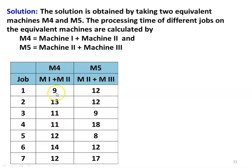The equivalent processing times: M4 — 9, 13, 11, 11, 12, 14, 12; and M5 — 12, 12, 9, 18, 8, 12, 17.